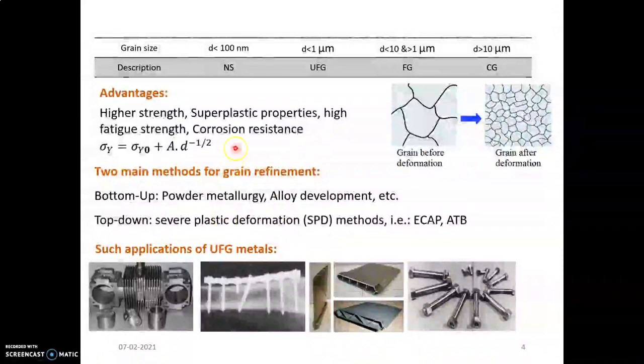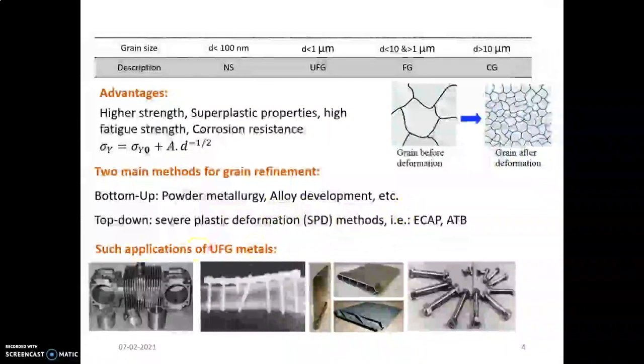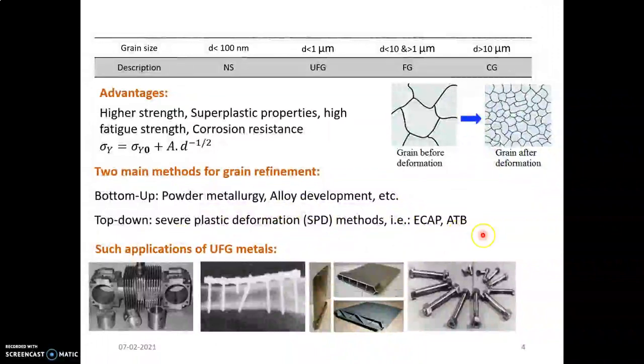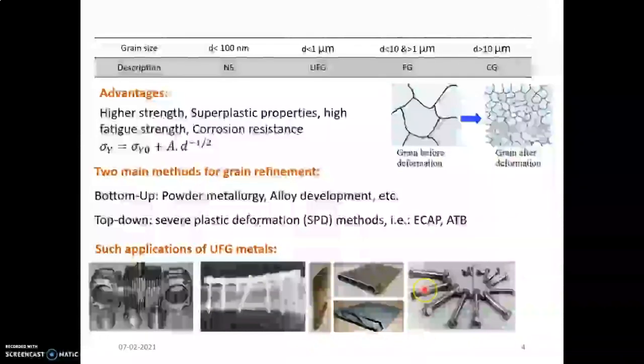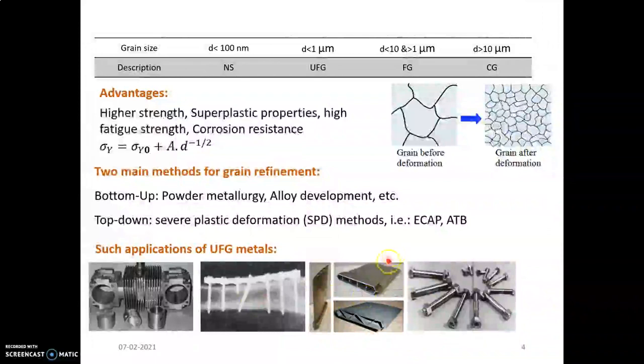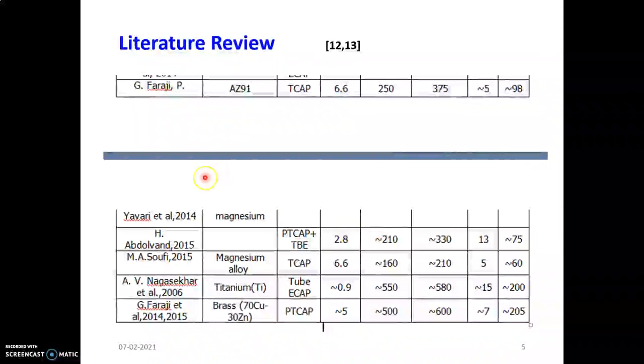There are two approaches of severe plastic deformation: bottom-up approach and top-down approach. Bottom-up approach is the powder methodology and alloy deployment, while the top-down approach is severe plastic deformation methods like ECAP and ATB. We are using top-down approach. You can see different applications here: cylinder chambers, piston cylinder chambers, nut and bolt assemblies, and different automotive parts. These are applications of severe plastic deformation.